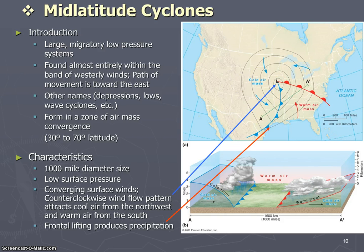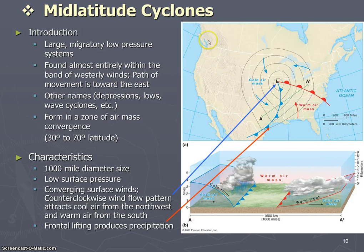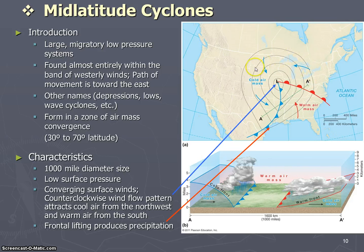The mid-latitude cyclone is about 1,000 miles in diameter, so that's quite a lot of the United States. It has a low surface pressure with converging surface winds. You'll notice that you have cold air that spins out of the high pressure from the northwest, moving toward that low, and then warm air moving up from the south — all of this moving in that counterclockwise direction we expect with a low pressure system. This frontal lifting, where the cold air mass meets the warm, will produce precipitation.